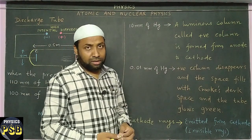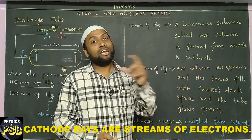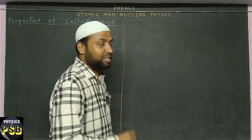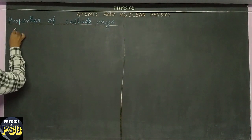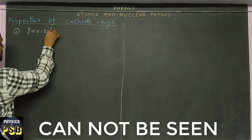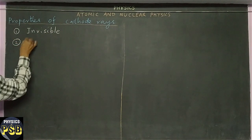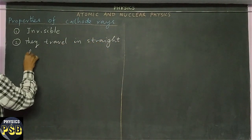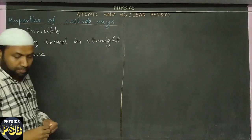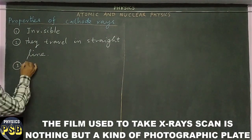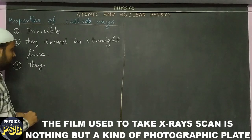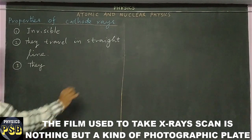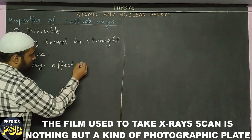Cathode rays are completely invisible and they are found to contain electrons — so cathode rays are nothing but a stream of electrons. Now we will discuss the properties of cathode rays. First: cathode rays are invisible. Second: they travel in a straight line. Third: they affect the photographic plate — when cathode rays fall on a photographic plate, after developing it shows dark spots.